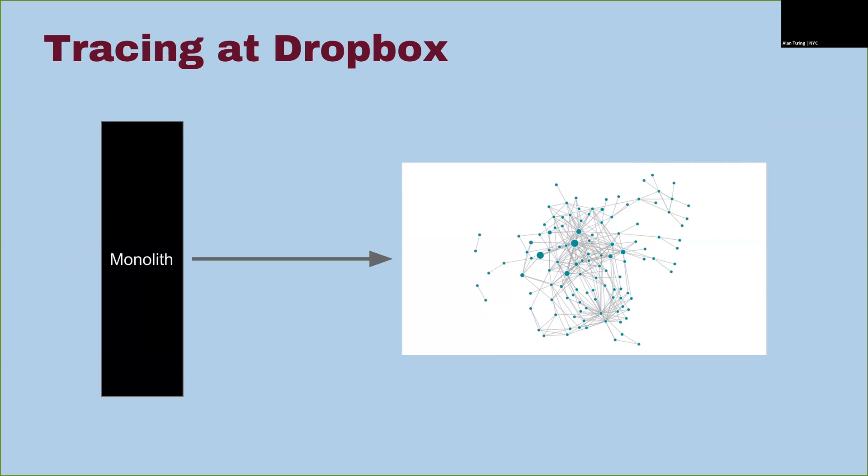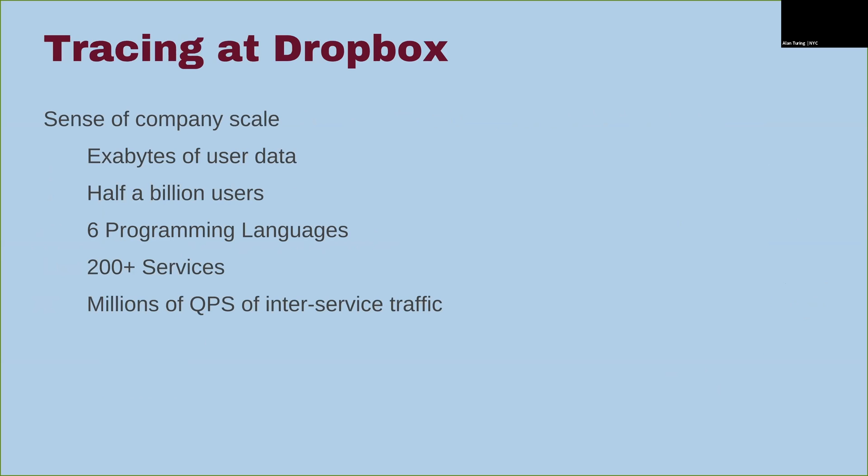So, tracing at Dropbox. The reason we started this is because we're moving from a monolith to microservices. We have one black box, and now we have hundreds of black boxes. To give you a sense of scale: we have half a billion users, six programming languages, 200-plus services, and millions of QPS of inter-service traffic. That's the scale at which we're operating this tracing system.